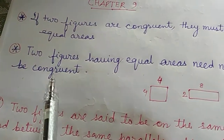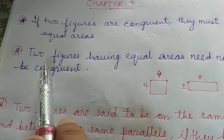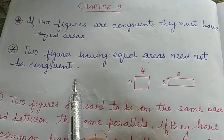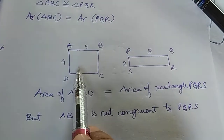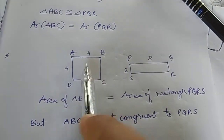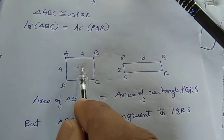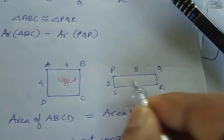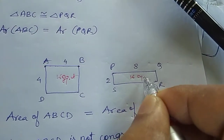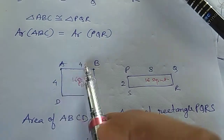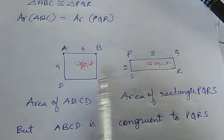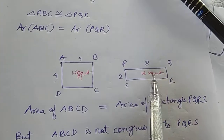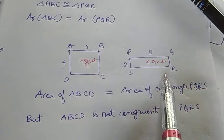But the converse may not be true. Two figures having equal areas need not be congruent. For example, here is a square and a rectangle, both with area 16 square units — four fours are 16, and eight twos are 16. The areas are the same, but the figures are not congruent.